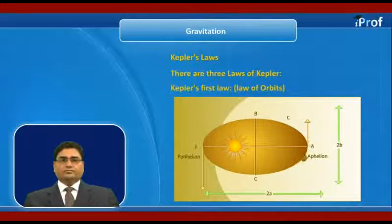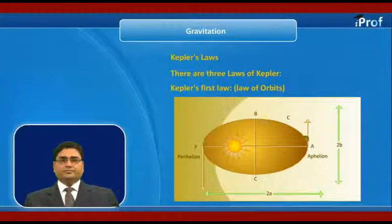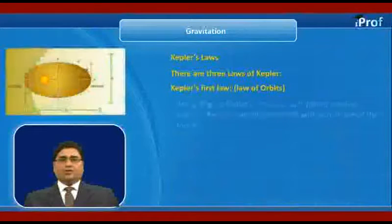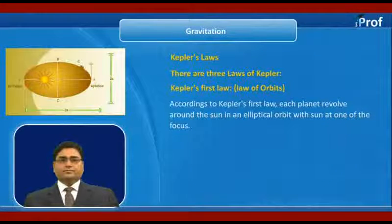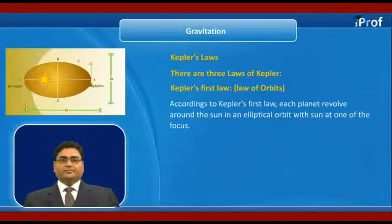First law or law of orbits. According to Kepler's first law, each planet revolves around Sun in an elliptical orbit with the Sun at one of the focus.